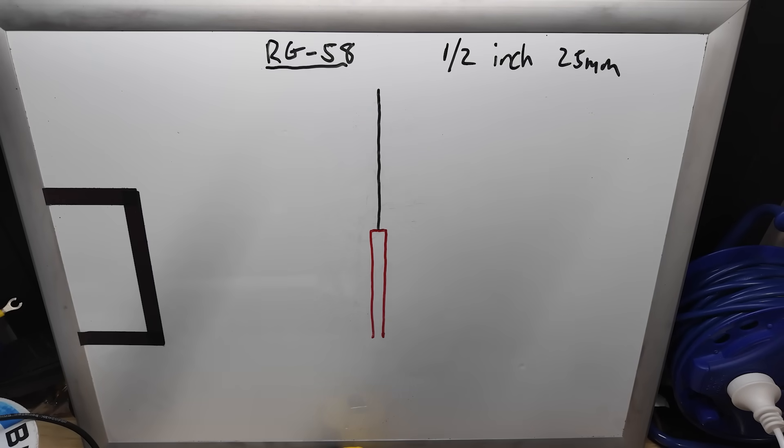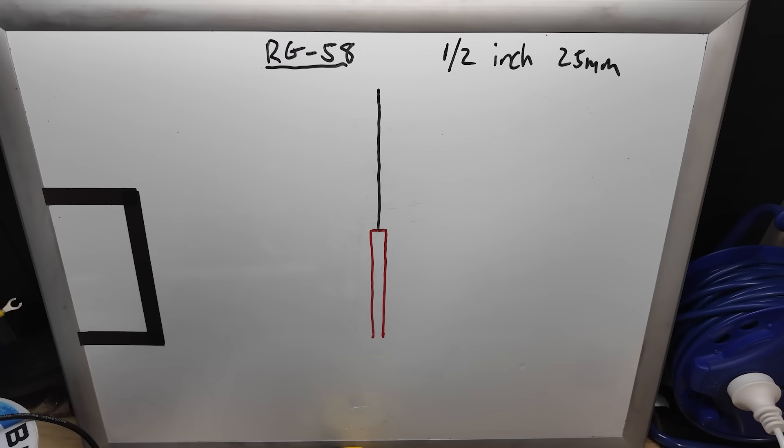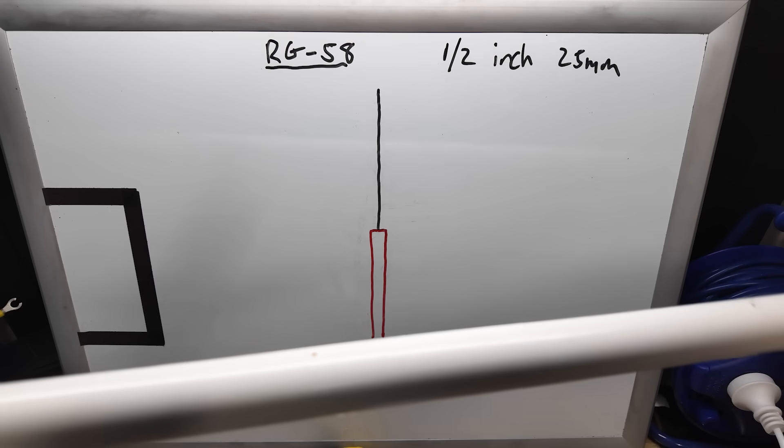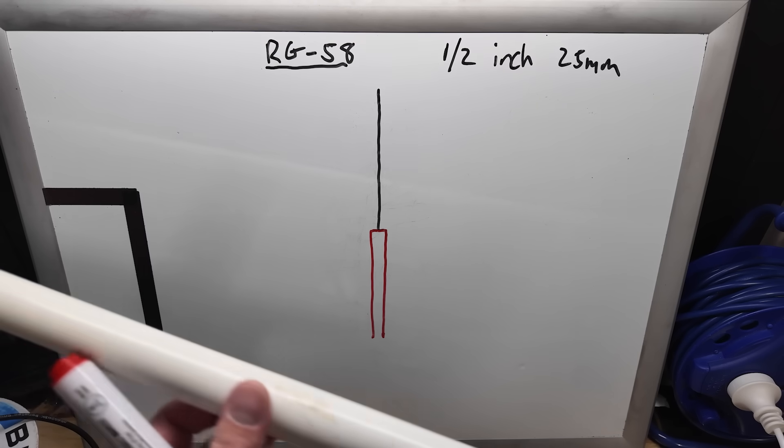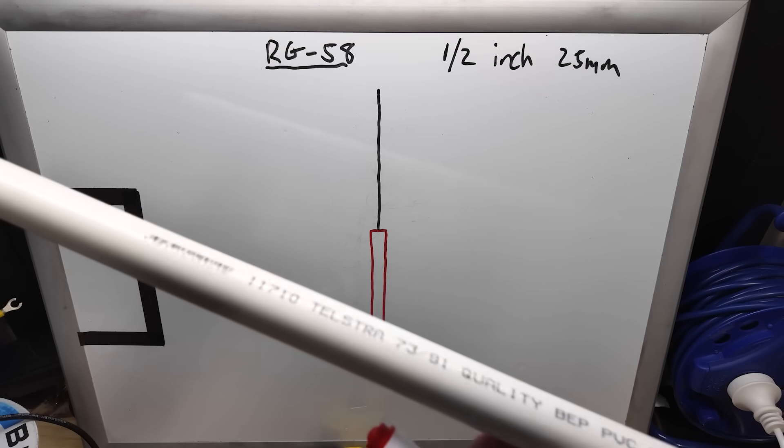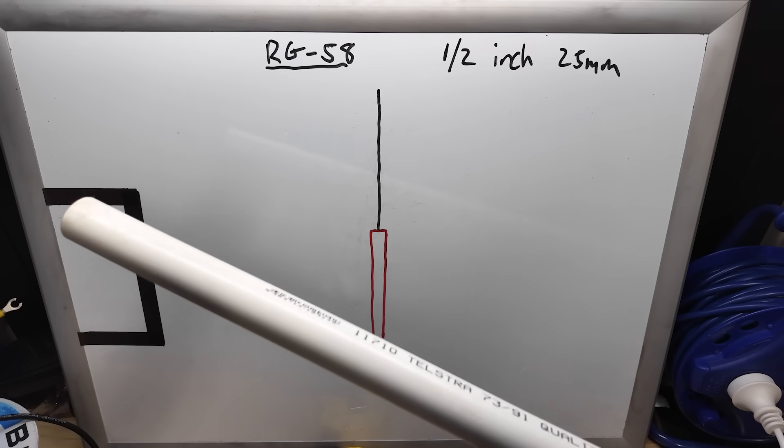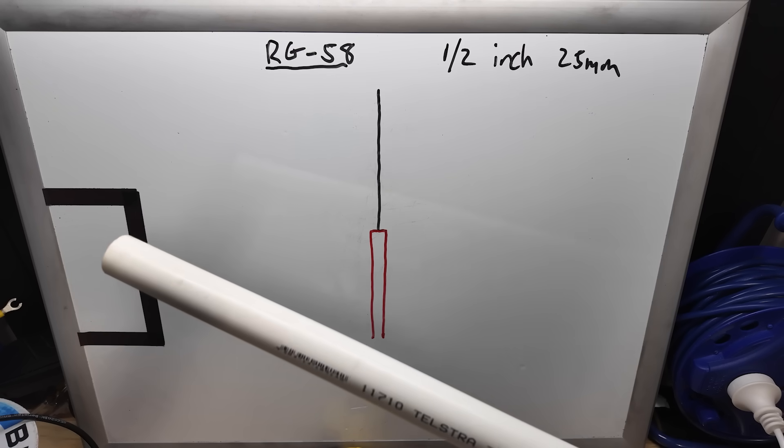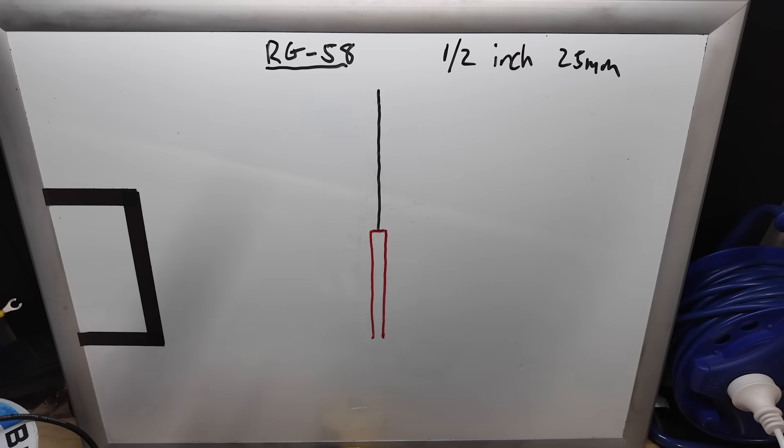So the measurements that we will use will depend on whether we put this inside the PVC or whether we put it outside the PVC. So here I've got my length of half inch 25mm PVC pipe. You can put it inside if you want to, that's going to change our length because of the electrically shortening of the antenna. So we have to make it a little bit longer if we mount it on the outside.